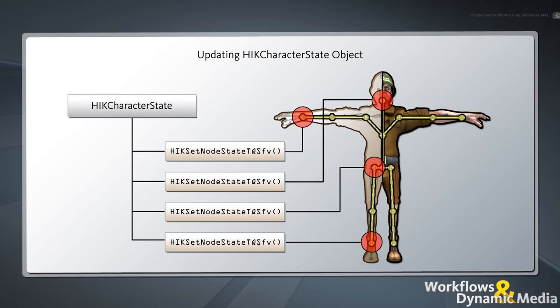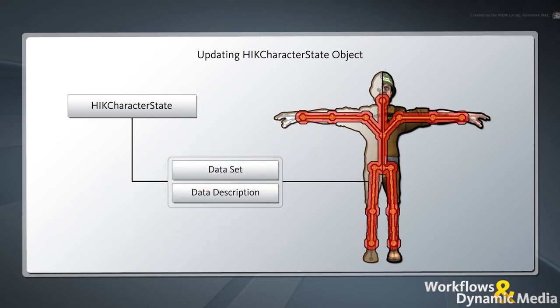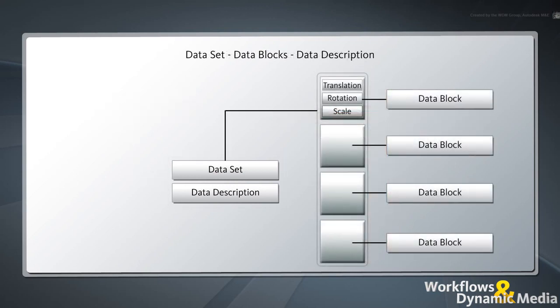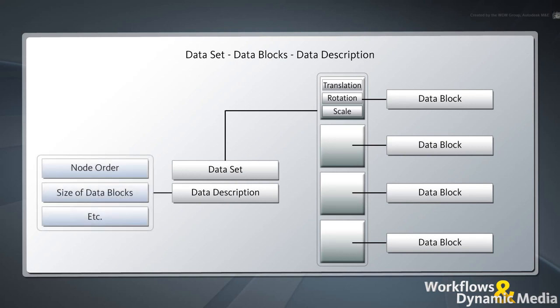Note that each function call only updates a single node at a time, which works well if you only need to update a small number of nodes like a head or a leg. However, to synchronize multiple nodes at once — say for an entire character — it's recommended that you use a dataset and an accompanying data description. A dataset is a block of memory divided into multiple data blocks that each contains the translation, orientation, and scale values of a single node. The accompanying data description defines the memory layout of this dataset, such as the order in which the nodes are defined and the size of their respective data block. Note that using a dataset is more memory efficient than doing multiple single node function calls, but also requires more setup and memory management. For more information on setting up a dataset, refer to the HumanIK documentation.